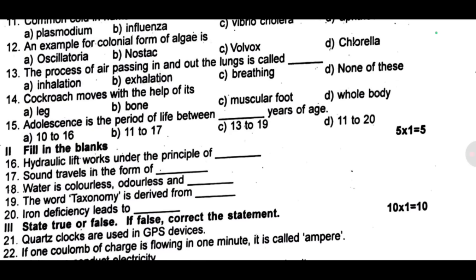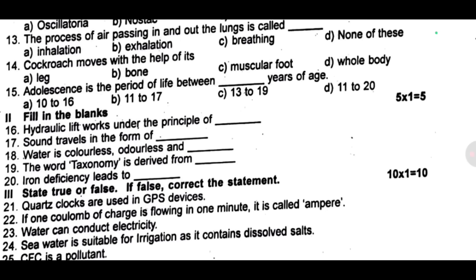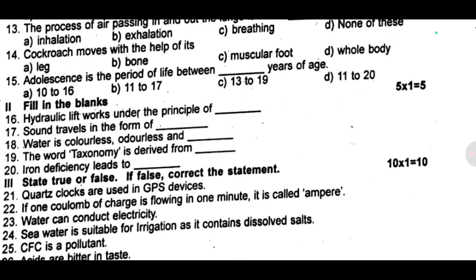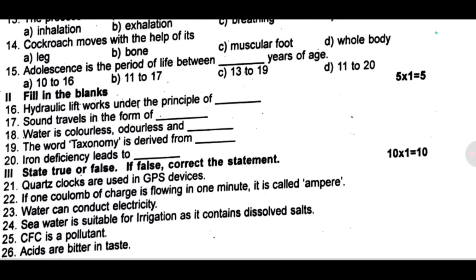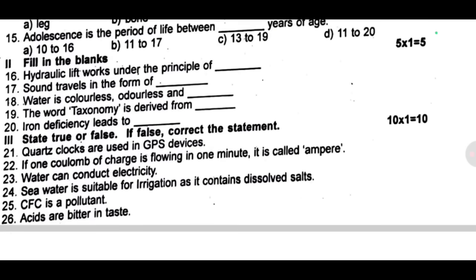Next is state true or false; if false, correct the statement. Twenty-one: quartz clocks are used in GPS devices. Twenty-two: if one coulomb of charge is flowing in one minute, it is called ampere. Twenty-three: water can conduct electricity. Twenty-four: sea water is suitable for irrigation as it contains dissolved salts. Twenty-five: CO2 is a pollutant. Twenty-six: acids are bitter in taste.